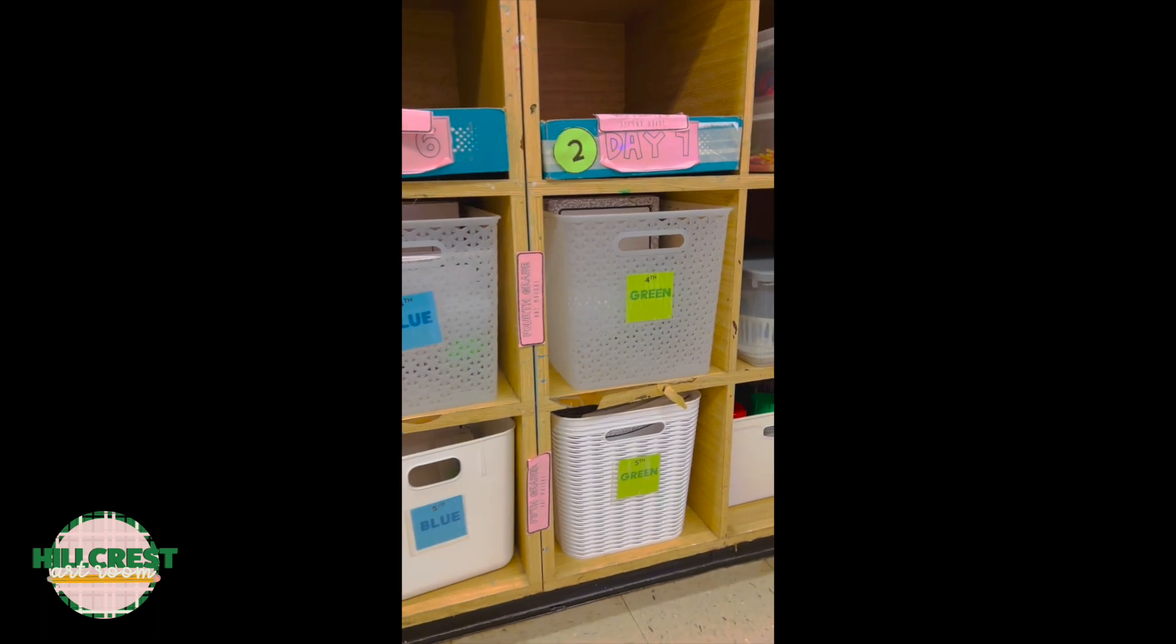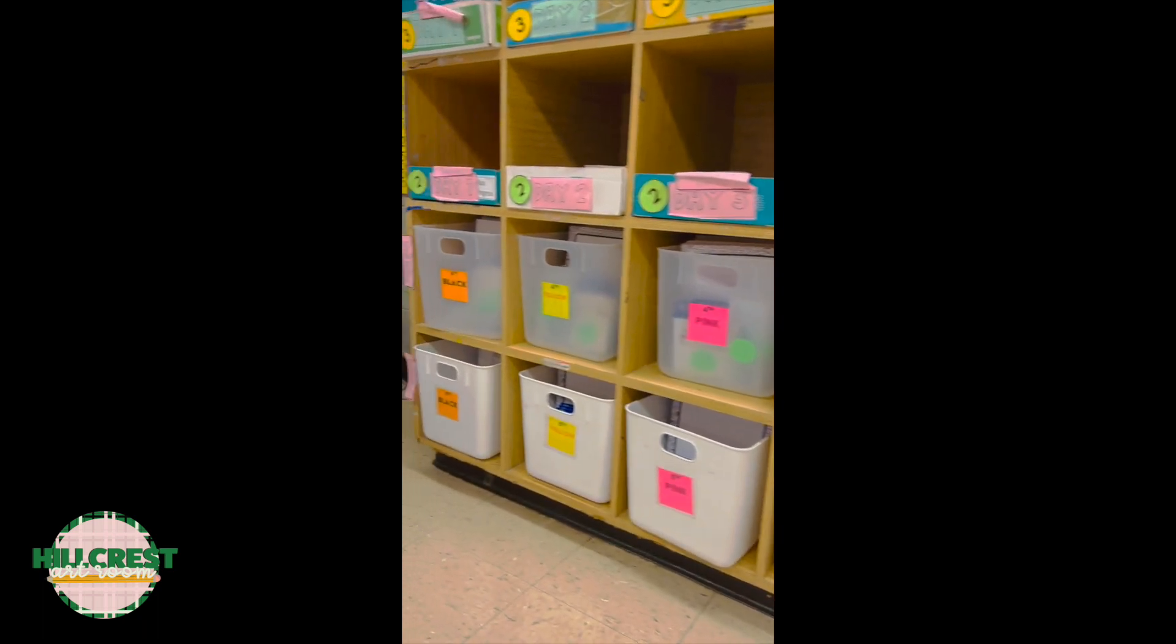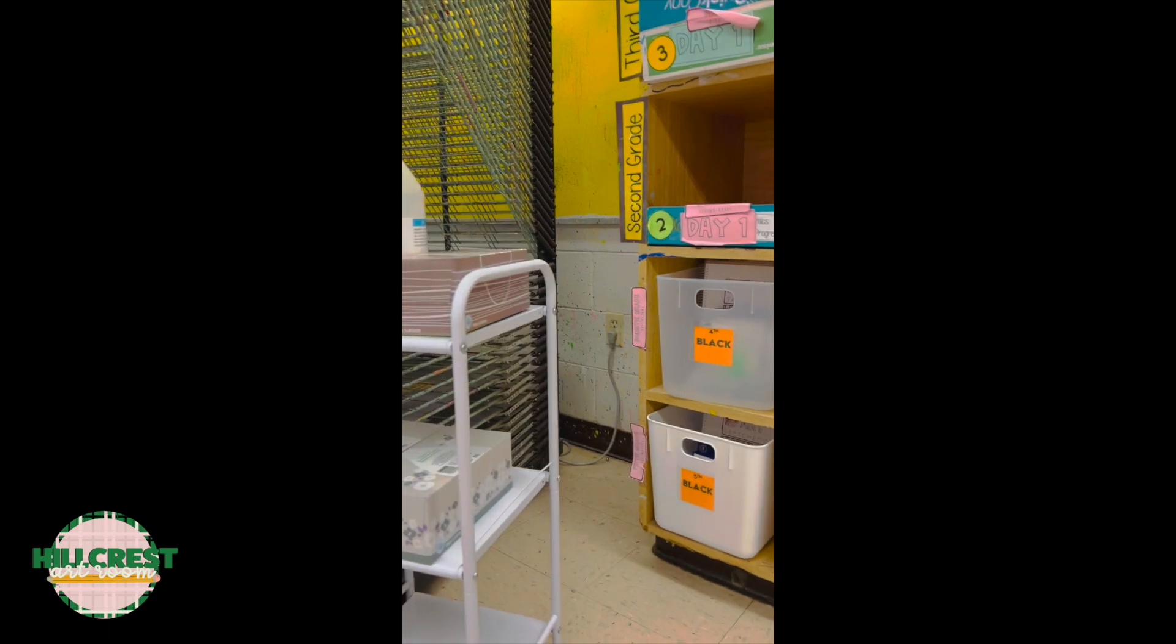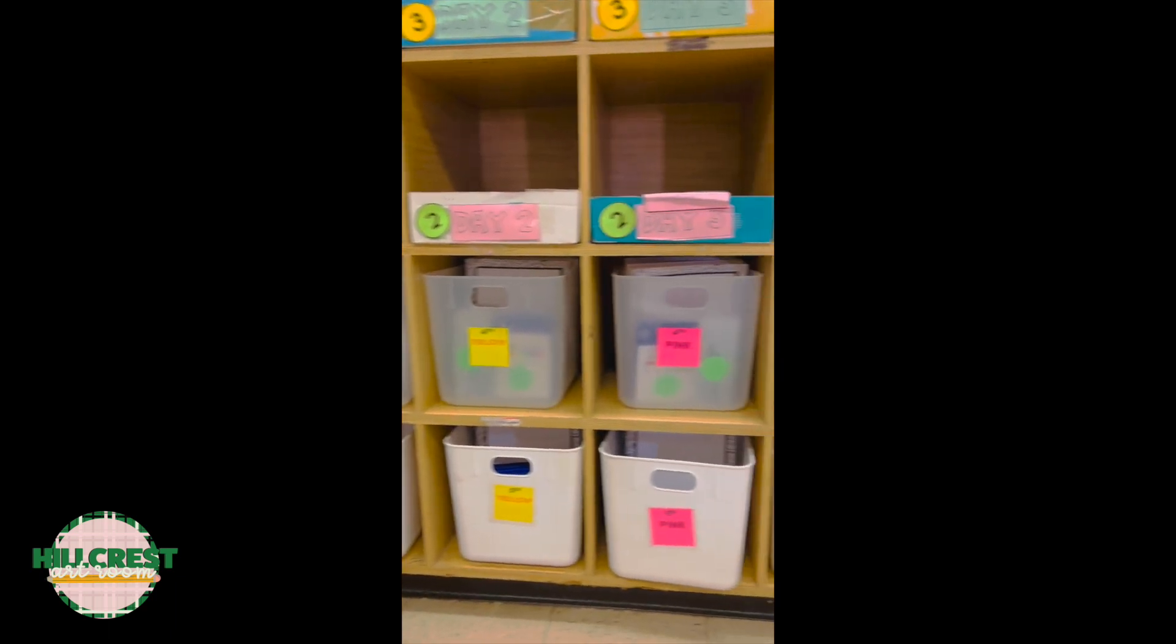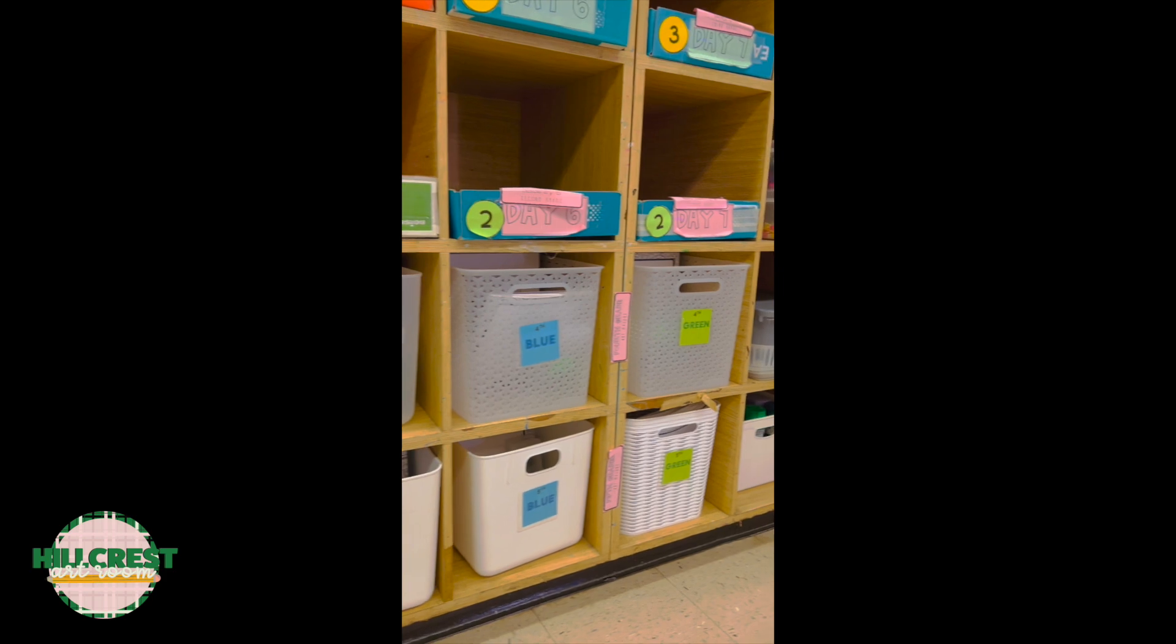They are in order by the color of the table. Black is first all the way to the left, and then you move to yellow, pink, red, purple, blue and green.